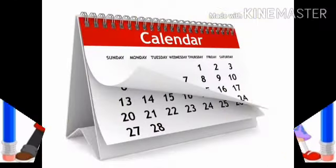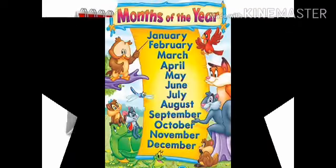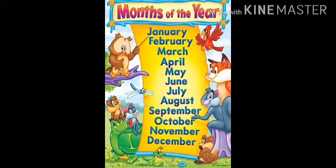You have seen the calendar. What is there? Day's name and month's name. The first month is January, then February, March, April, May, June, July, August, September, October, November, and December.